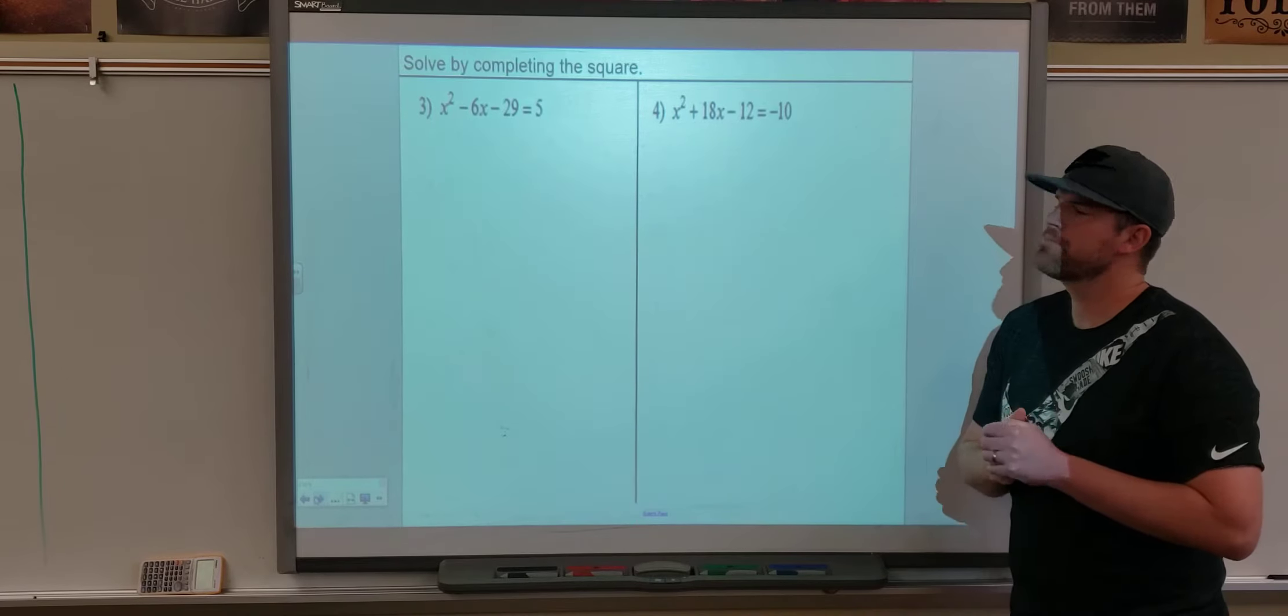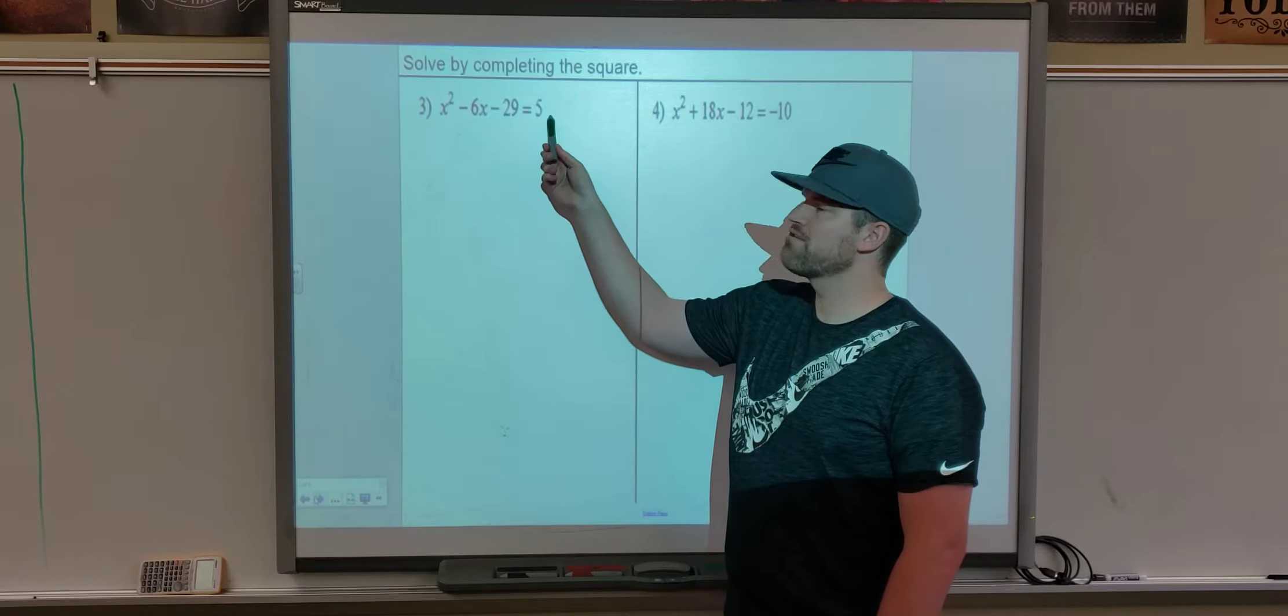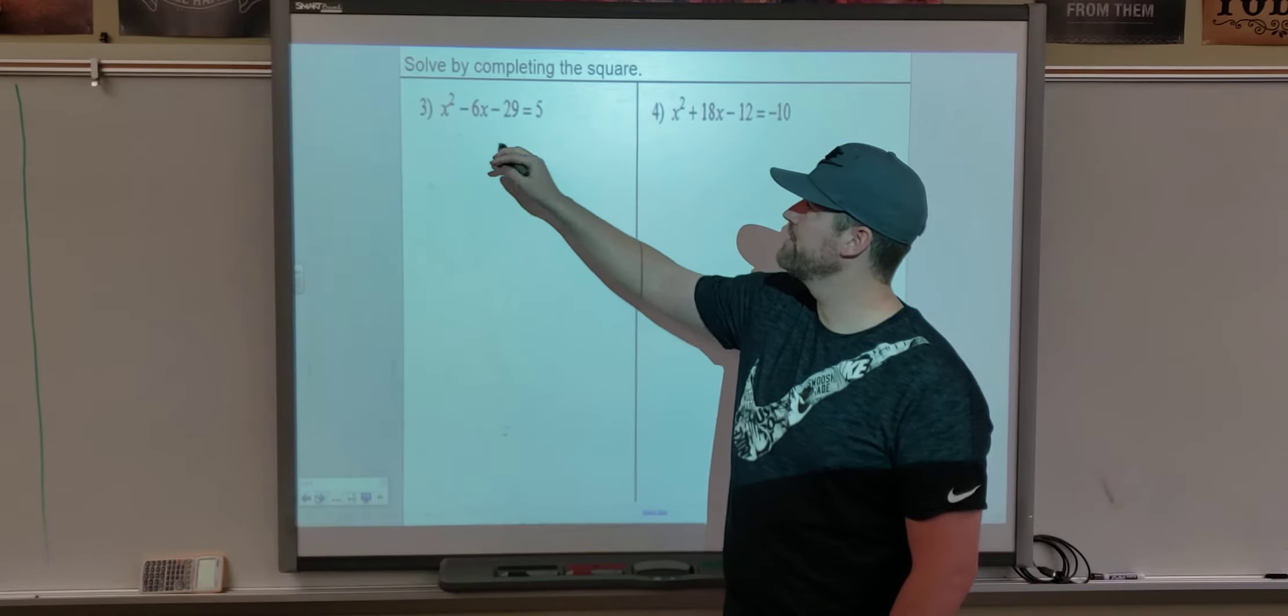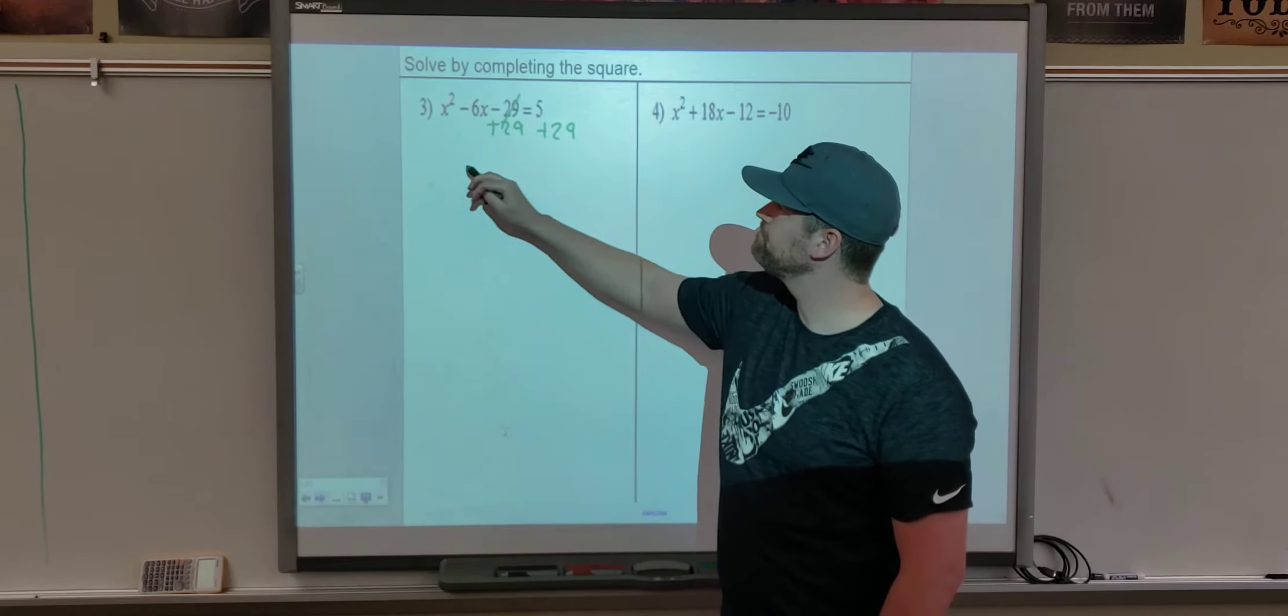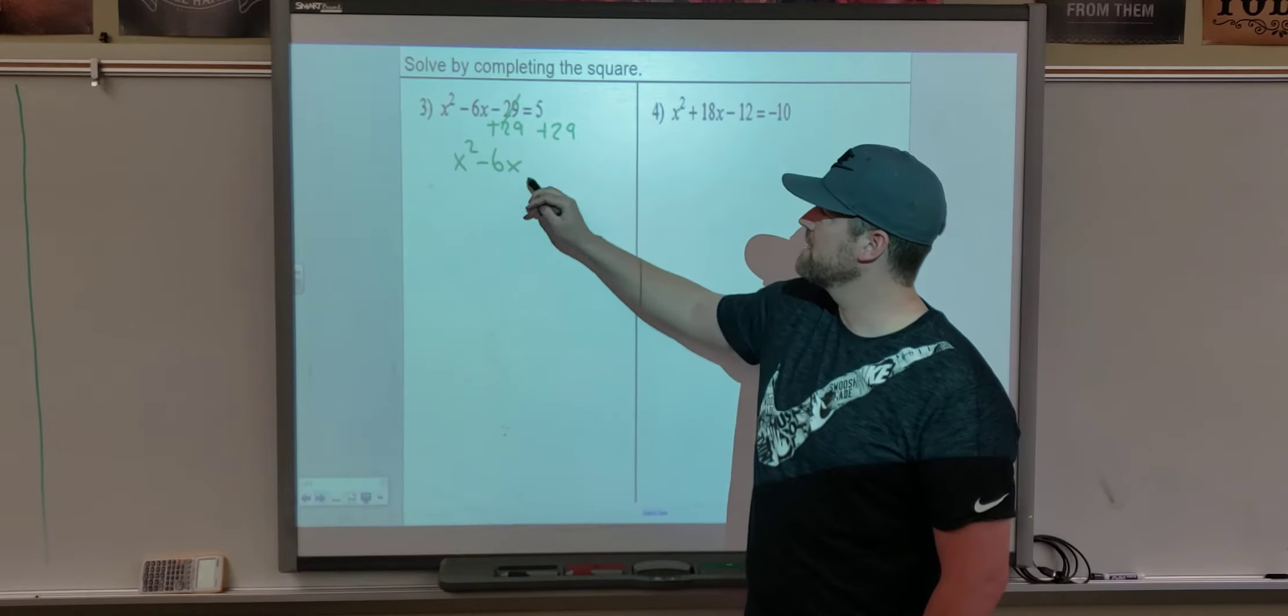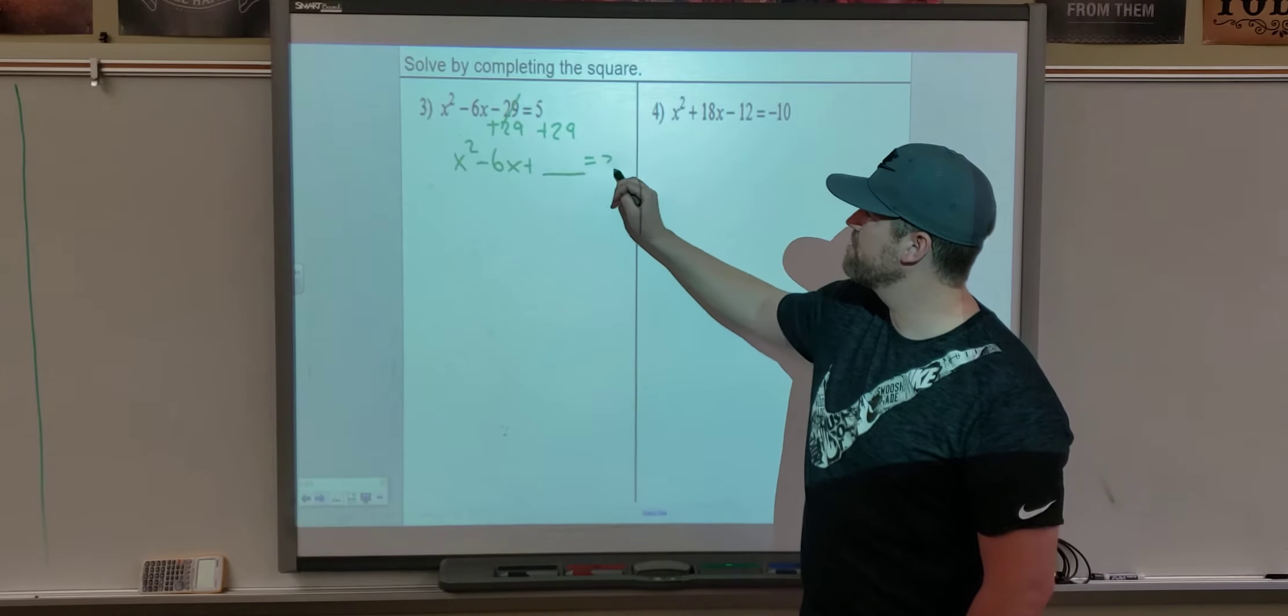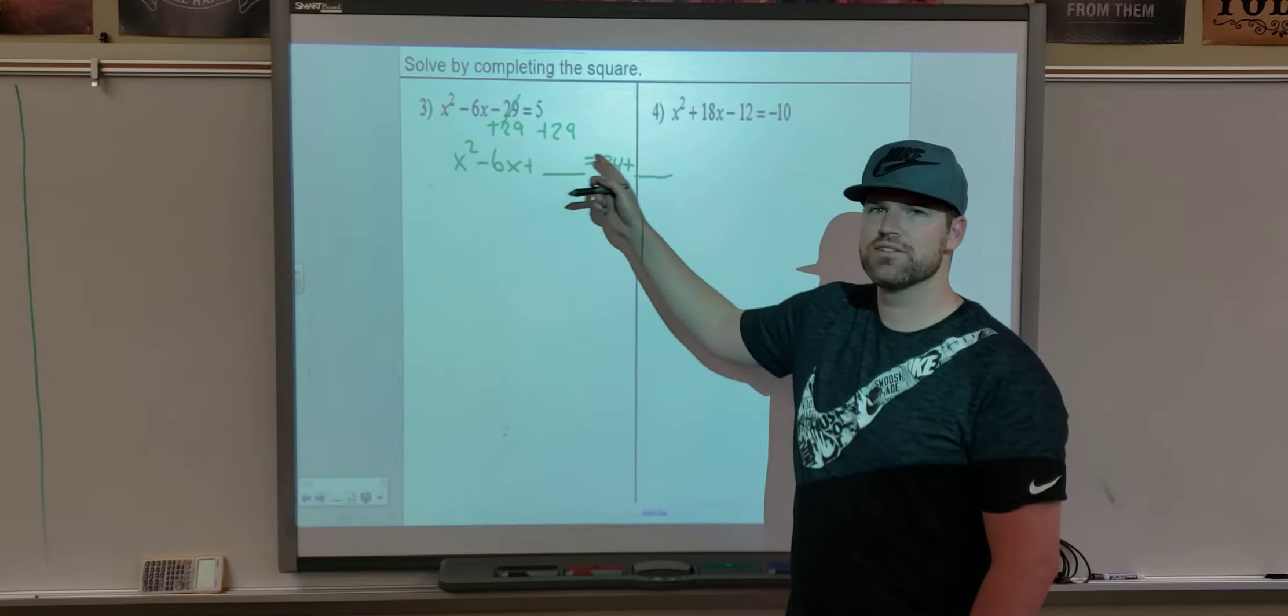All right. Two more problems. Biggest difference on this one is we have a number here, and we also have a number over here. That's fine. We know that we want it to end up being x squared minus 6x plus a blank. So I need to move this negative 29 to the other side. So I'm going to add 29. x squared minus 6x. We no longer have anything here, which is perfect. We're going to find what that new number is. And then over here, we have 5 plus 29, which is 34. And then whatever we add in is our new number.